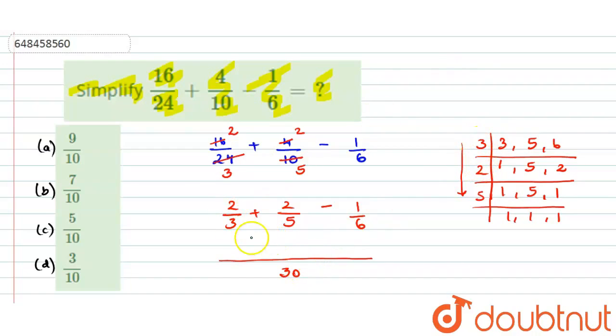Next, what will come in the numerator? 30 divided by 3 is 10, so 10 multiply by 2 is 20. Plus 30 divided by 5 is 6, so 6 multiply by 2 is 12. Minus 30 divided by 6 is 5, so 5 multiply by 1 is 5 only.